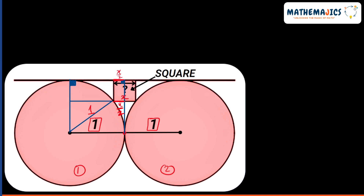As you can see, there is a right triangle in this figure. Let's name this right triangle: let this be O, let this point be A, let this point be B. This is the radius of the circle, which is one. This part is nothing but the side of the square, which is x. So OA will be 1 minus x, and OB is 1 — the radius of the circle.